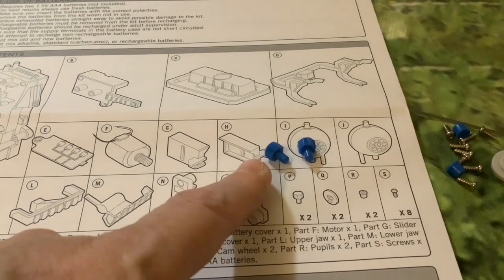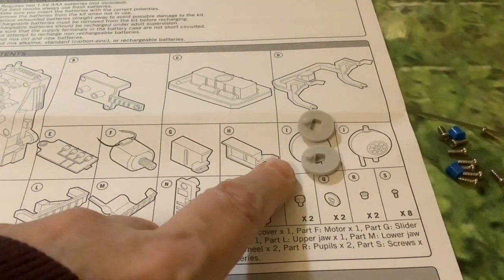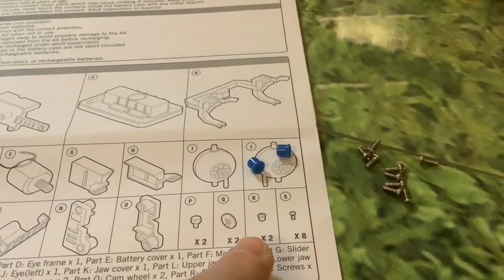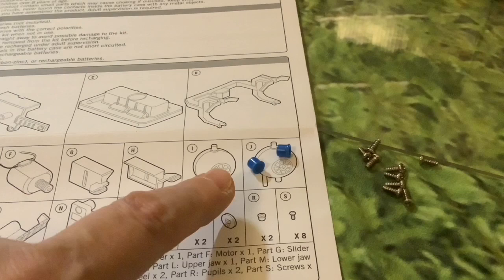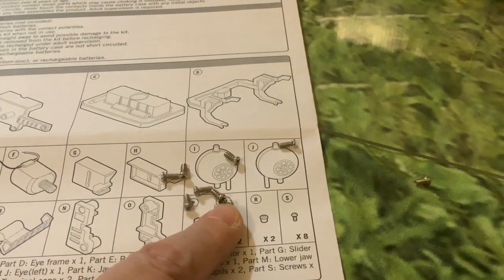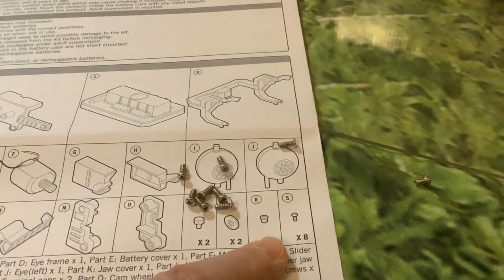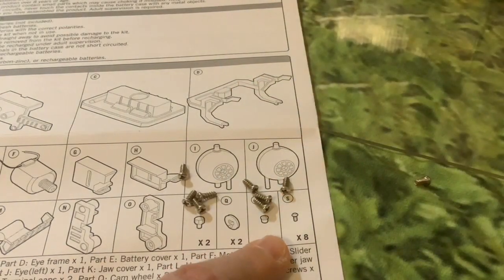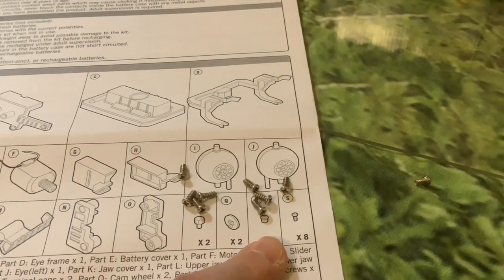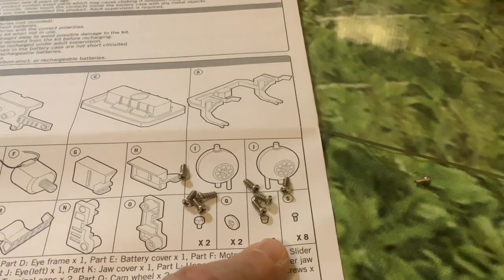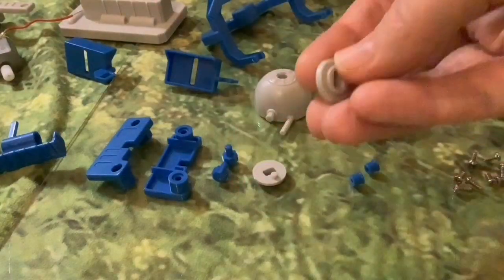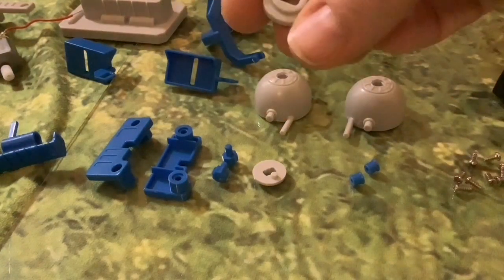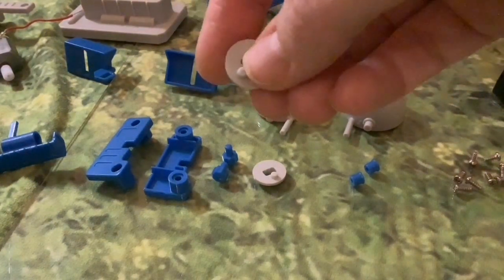We've got P, two terminal caps. Q, two cam wheels. R, two pupils, so they must go in the center of the eyeballs. And finally eight screws. This time they've not given us an extra one. Looks like everything's present and correct again in this kit. I'm interested in this component, cam wheel, because it's a new one. I've heard about cams before. I think it's something that when it rotates it puts a wobble into something.